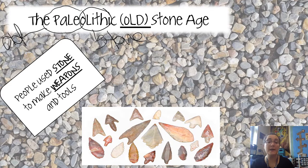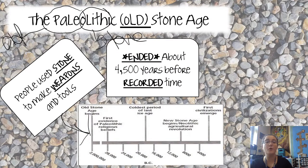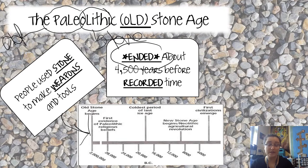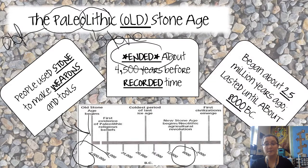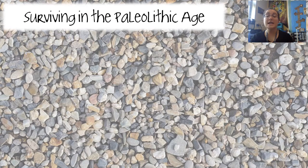We call it the Old Stone Age because people used stones to make weapons and tools — arrowheads, axes — using those resources. It ended about 4,500 years before recorded time, before we figured out how to write things down. Please make sure you add the word 'ended' to your notes. We're talking about a huge period of time starting from about two million years ago to about 8,000 BC — most of human history.